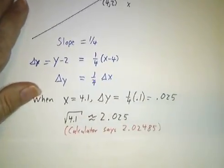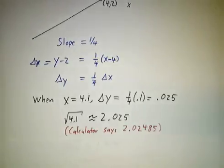Now if you pull out a calculator and compute the square root of 4.1, you'll actually get 2.02485. It's not quite 2.025, but it's darn close.